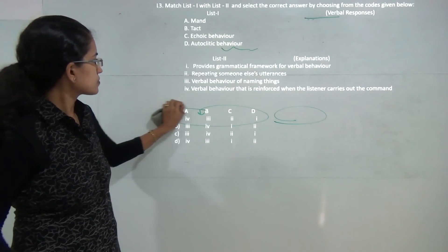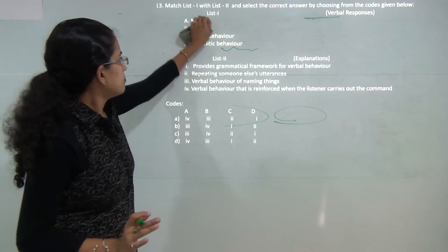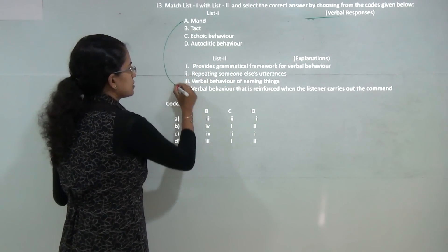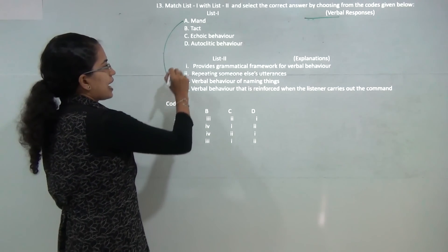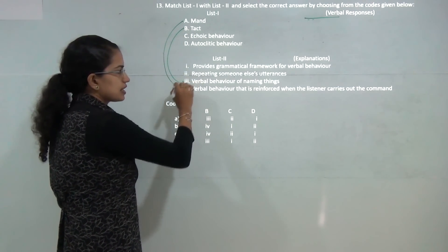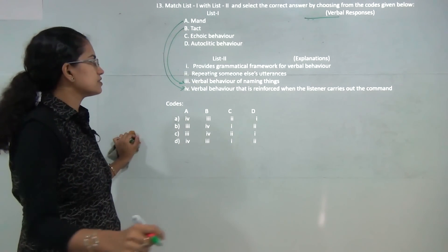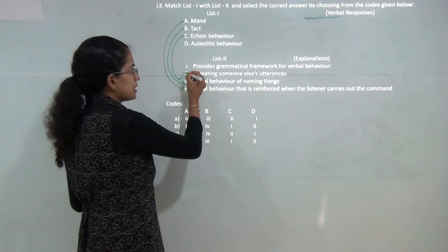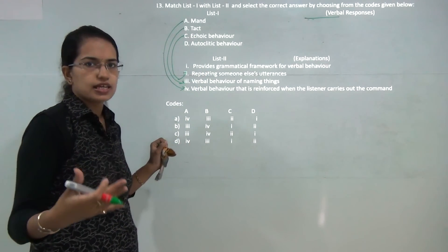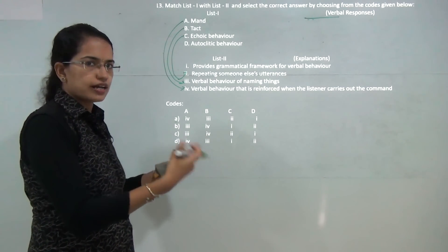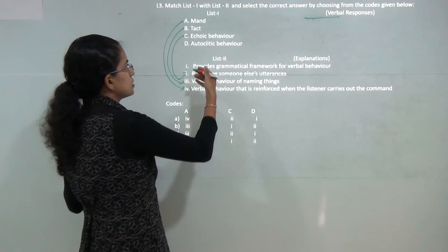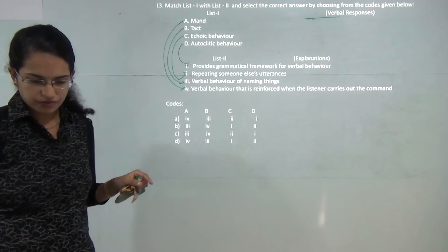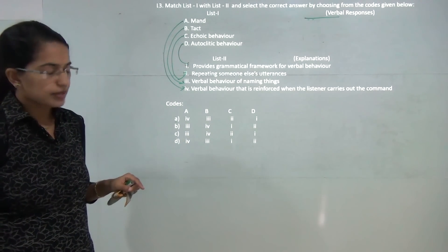Next question: Mand is a verbal behavior which is reinforced by the listener who carries out the command. Tact is a method of naming things. Echoic means repeating what someone else is saying. So if mama says something, the child would speak the same thing. That's echoic behavior. Autoclitic is a kind of grammatical framework that we provide for understanding the grammar concepts.